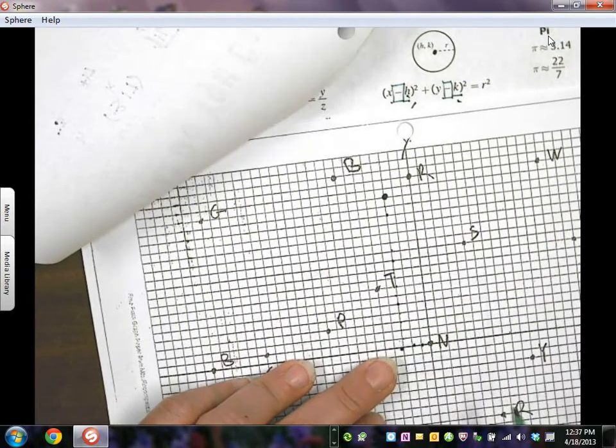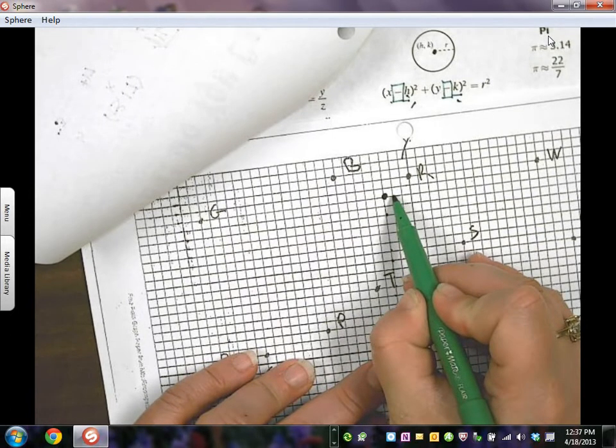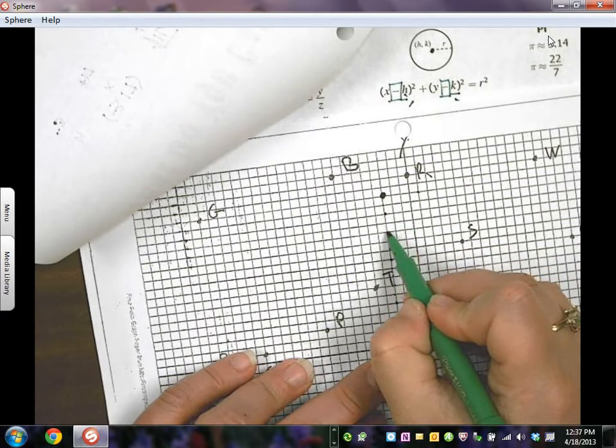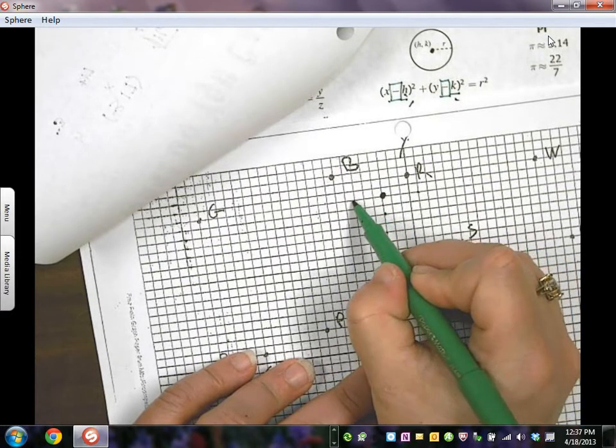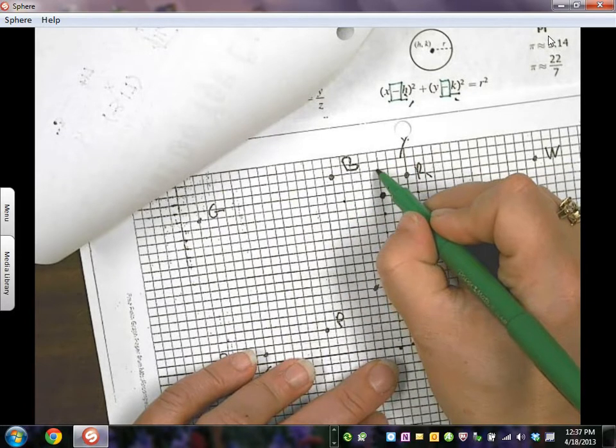I know my radius is 4. So I'm going to lightly go around and say 1, 2, 3, 4. There's one place, and there's another, and there's another, and there's the last.